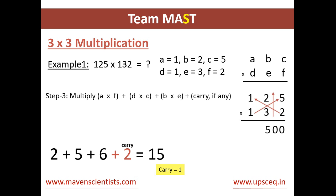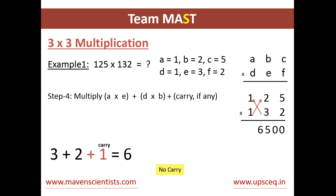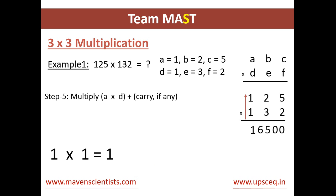In the third step, we multiply 2 into 1 plus 5 into 1, which gives 7, plus 3 into 2 which is 6, plus the carry 2 from the previous step. We get a total of 15, so we write 5 and carry 1 to the next step. In step 4, we multiply 1 into 3 plus 1 into 2, giving 3 plus 2 plus carry 1 equals 6, and we write 6. In the next step, we just multiply 1 into 1 and write it. So we get 1, 6, 5, 0, 0 as the answer.